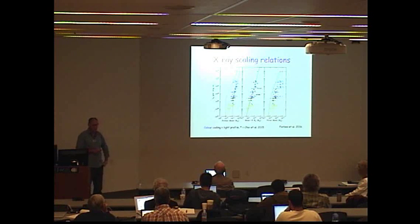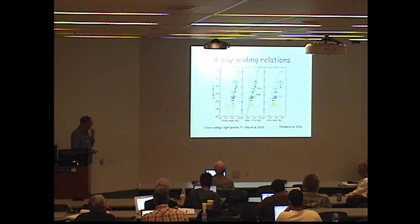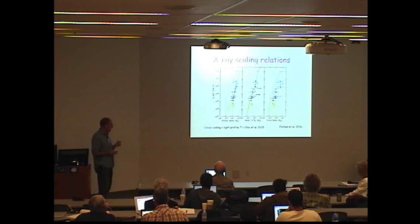We get a nice correlation: luminosity going as mass to about the cube power, quite a tight relation here. One of the nice things is we managed to put on the simulations of Choi. This is a cosmological simulation where the AGN feedback is mechanical feedback, which makes a big difference compared to the thermal feedback in their model.